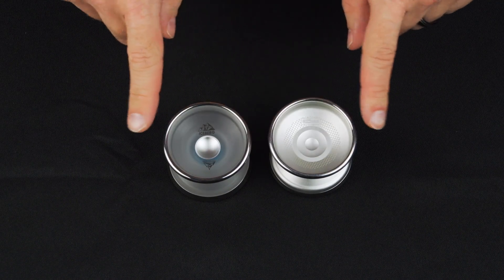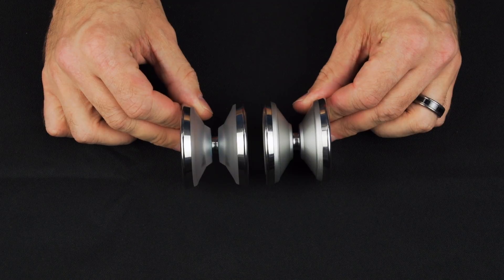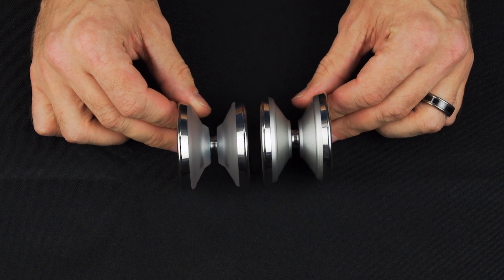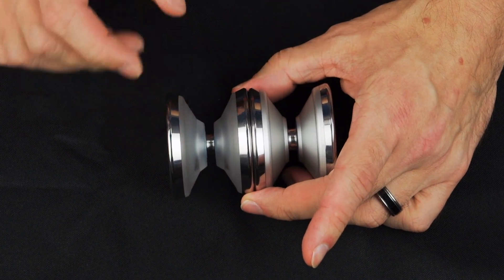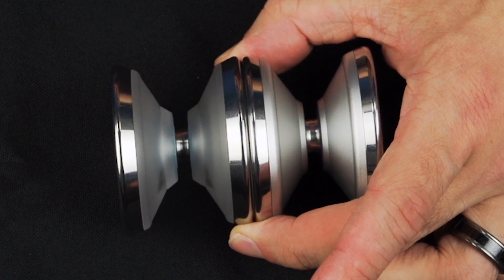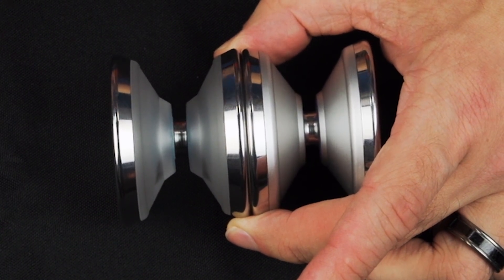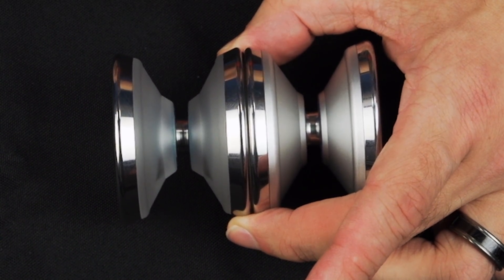First of all, you can see the designs are really similar, especially when you put the yoyos up like this side by side. There have been some changes in the design, which we feel are improvements. You can see the step coming off the bearing here has been exaggerated on the Iceberg. That makes it a little bit better for horizontal. It also makes it just a little bit more tilt resistant, which is great.